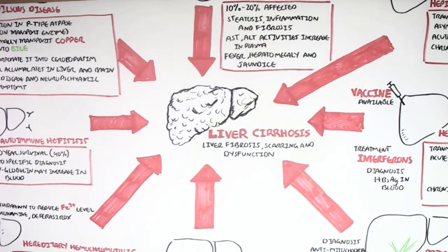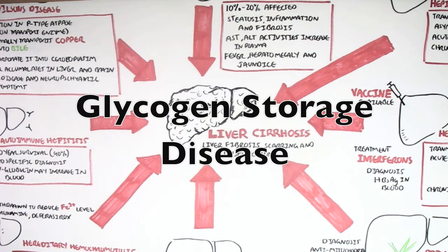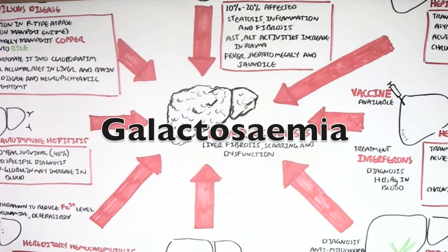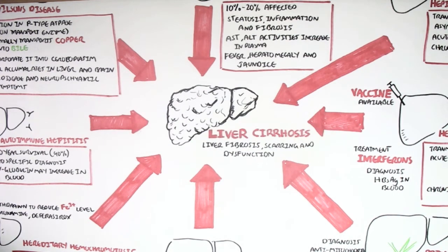There are other causes of liver cirrhosis such as glycogen storage disease and galactosemia. You can look up what these conditions are.